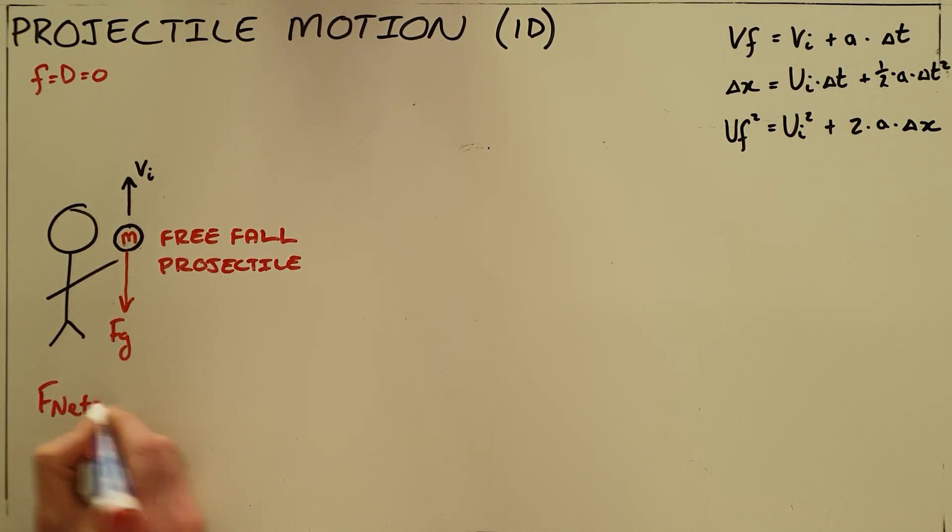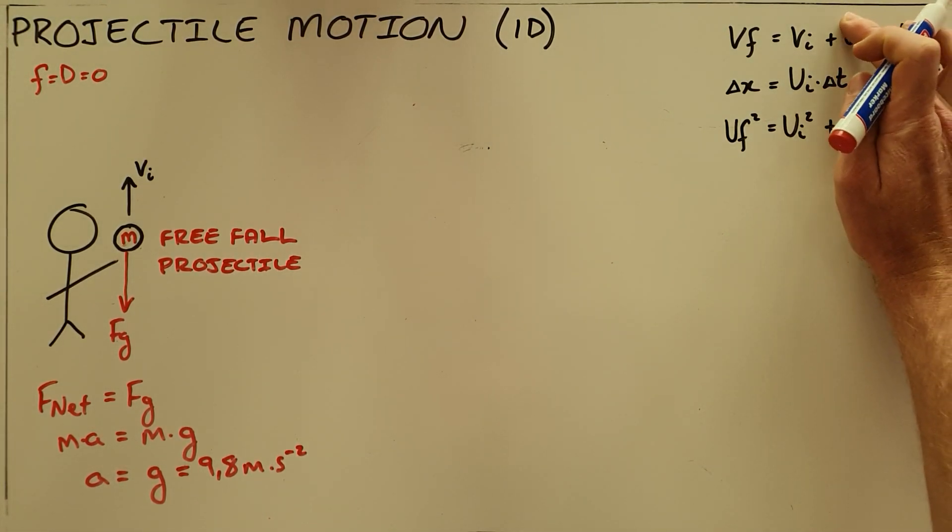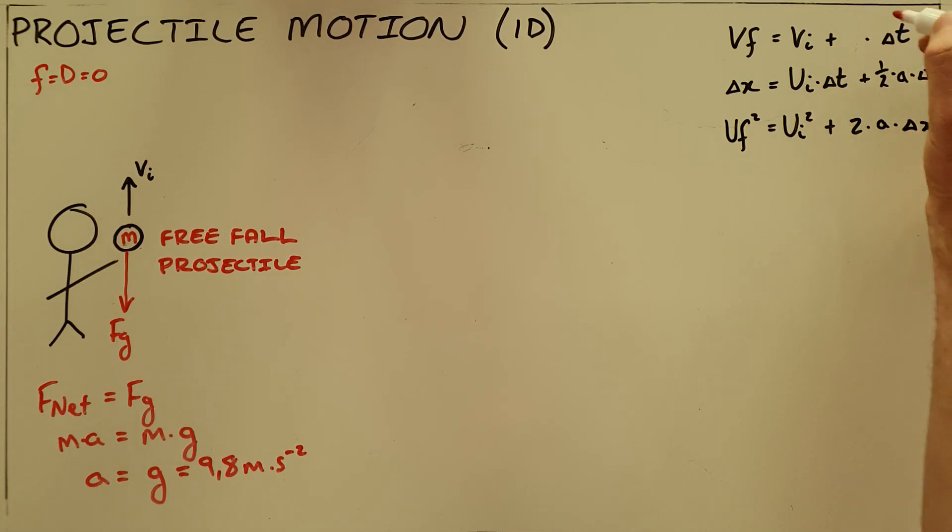Since this is the only force acting on the object, the net force equals the force of gravity. This means the acceleration of this object is always going to be a constant—Earth's gravitational acceleration constant. We can now rewrite our equations of motion where we replace the variable for acceleration with our constant for Earth's gravitational acceleration.